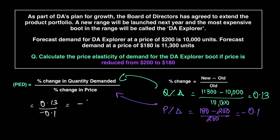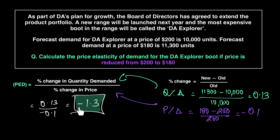Now divide 0.13 by minus 0.1, which gives a PED of minus 1.3. The minus sign simply indicates an inverse relationship between price and quantity — when price goes up, demand falls, and vice versa. You can choose to leave the minus sign in or out; it doesn't affect the interpretation.